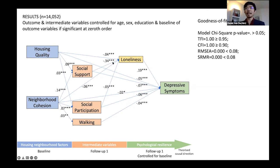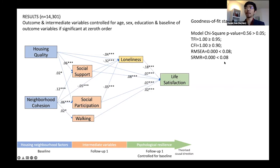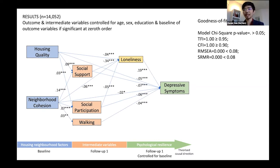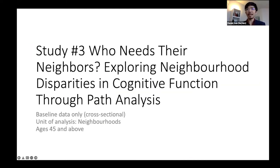The second PATH model looks at depressive symptoms. In the previous diagram, there is no direct link from neighborhood cohesion to life satisfaction — that doesn't mean neighborhood cohesion is not important, but rather our intermediate variables explain the effect of neighborhood cohesion on life satisfaction very well, accounting for 100% of that effect. For depressive symptoms, about 50% of the effect still goes through the direct path, with everything else indirect through four intermediate variables.